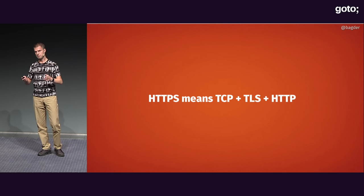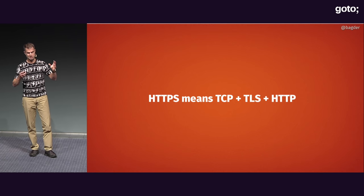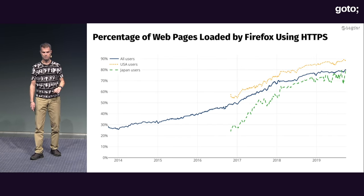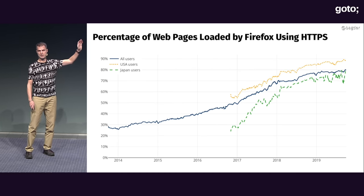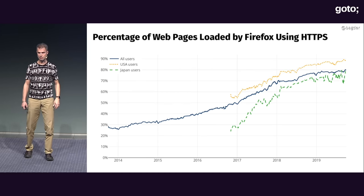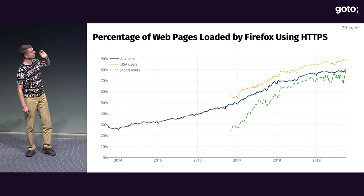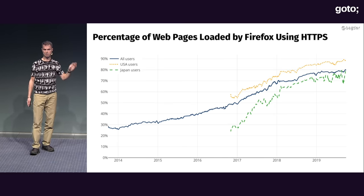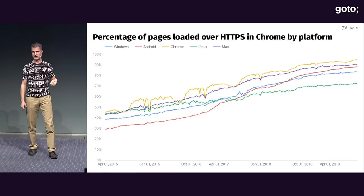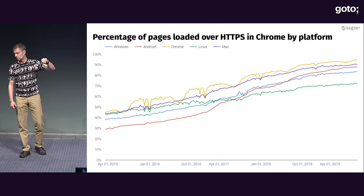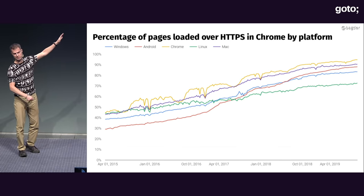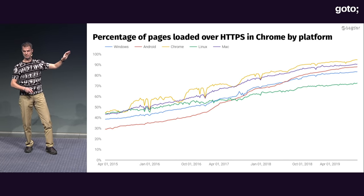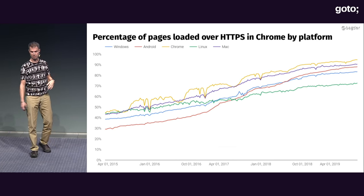These days we talk about HTTPS a lot — HTTPS being TCP with TLS, and then we do HTTP on that. If we look at the trends, here's some Firefox trend data. We can see that loading web pages is done more and more over HTTPS. It's basically around 80-90% somewhere. If you look at the same data from Chrome and Google, it's pretty much the same. The trend is clear, and it's probably going to climb a little bit more. Definitely, HTTP traffic is a lot of HTTPS these days.